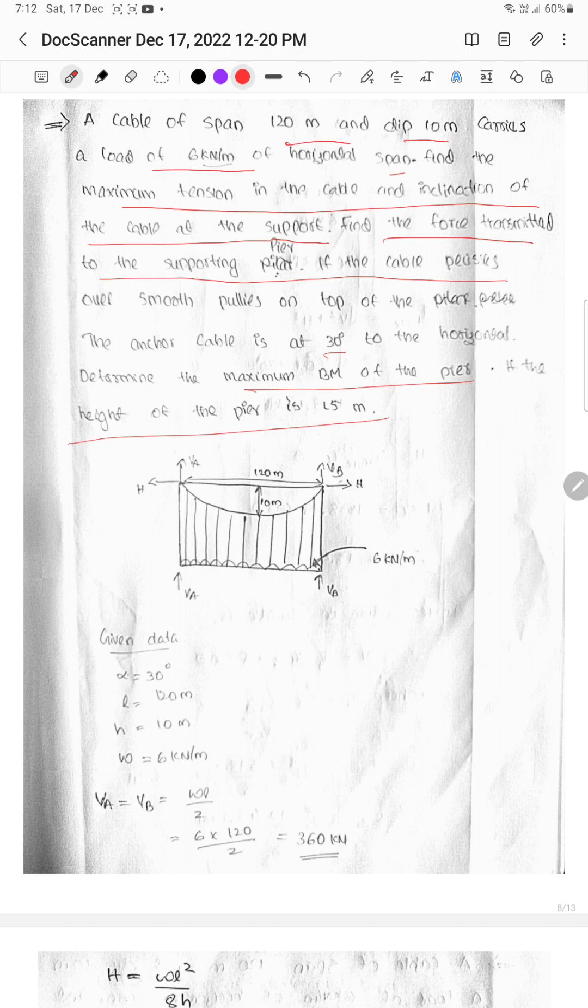This question involves 6 kN per meter load, with distance 120 meters and dip 10 meters. The anchor cable is 120 meters at 30 degrees. The reactions are marked as horizontal and vertical.